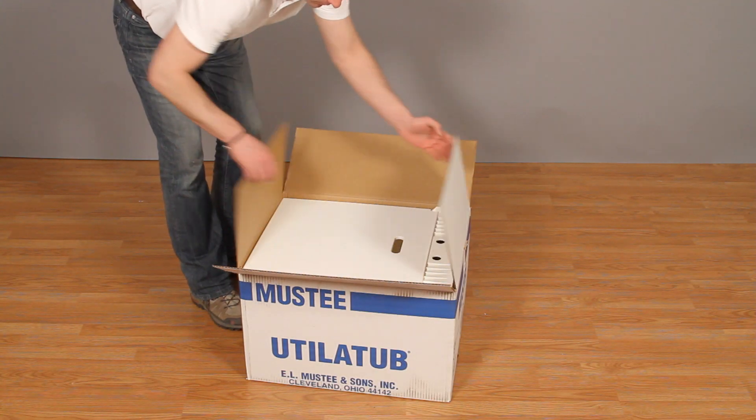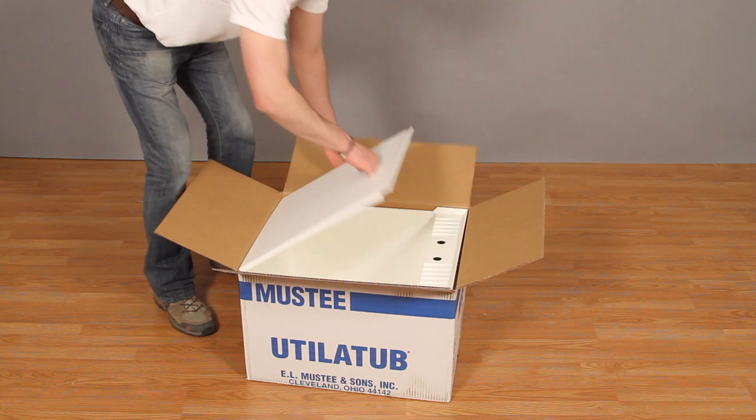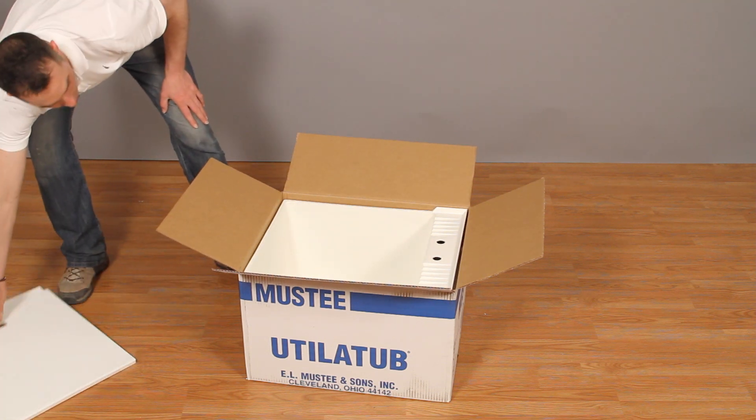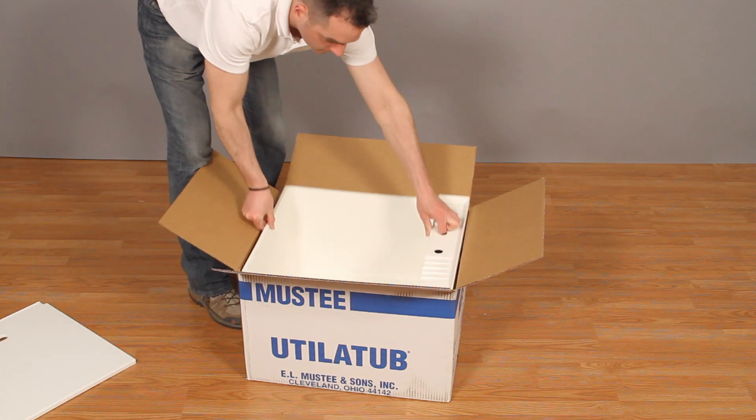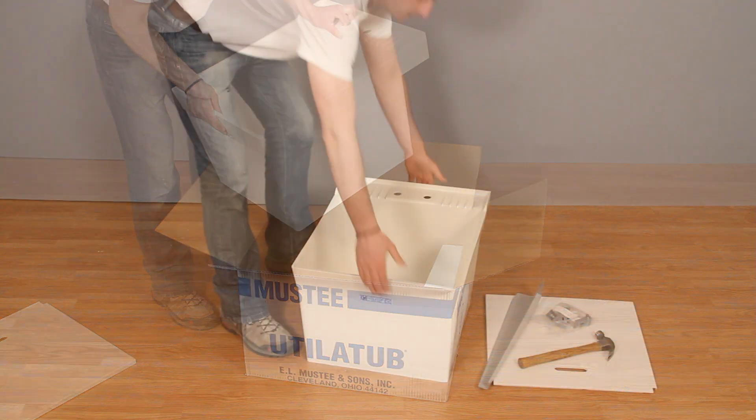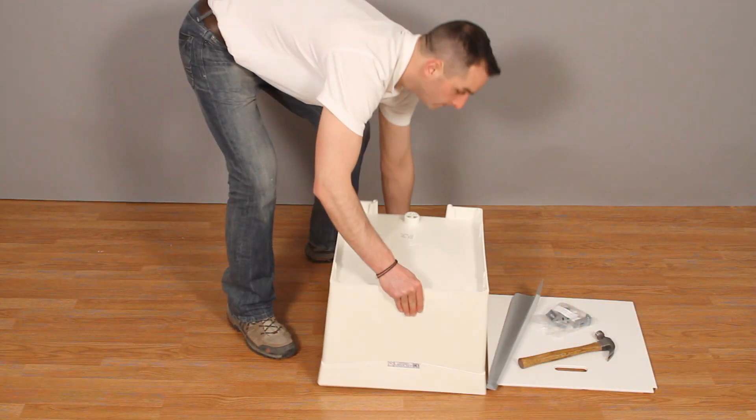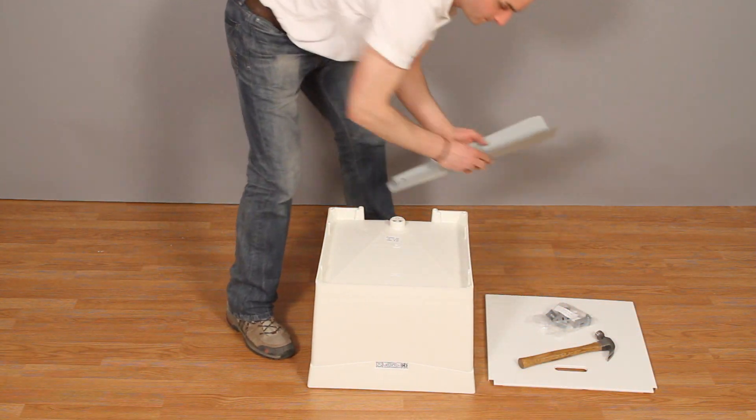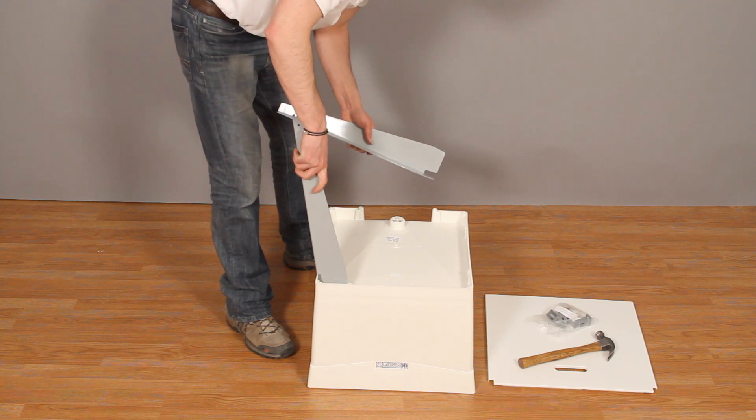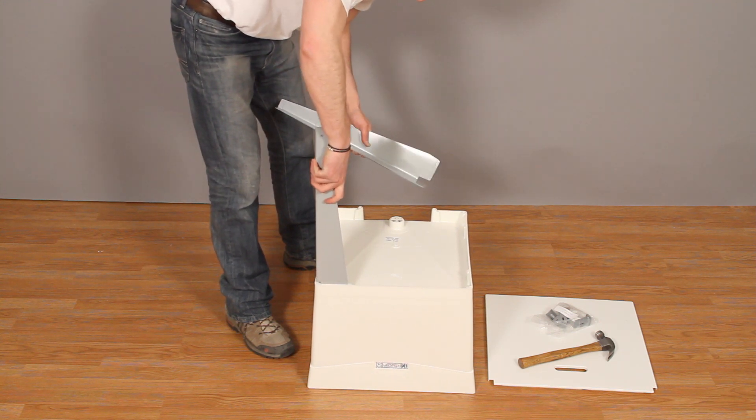Begin by removing the contents from the box. Set the laundry tub upside down on a clean, smooth surface. Insert the legs into the corner sockets on the bottom of the tub.